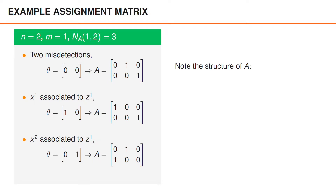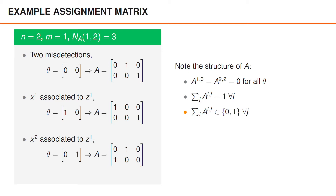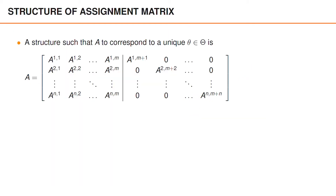From this example, we can note a structure for the assignment matrix. For all data associations, the elements on row 1, column 3 and row 2, column 2 are always 0. For each row, the sum over the columns is equal to 1, and for each column, the sum over the rows is either 0 or 1. This structure ensures the assignment matrix corresponds to a unique valid association.